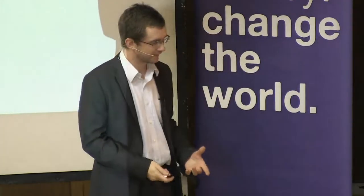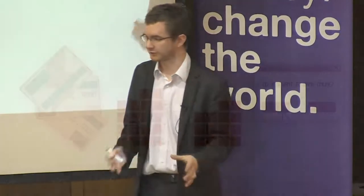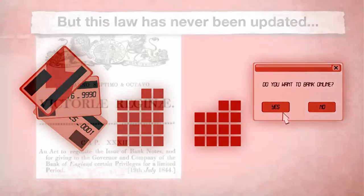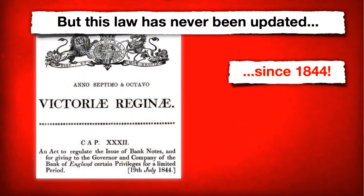Over time, as we discovered electricity, we got debit cards, electronic fund transfers, and internet banking — to the point now where more than 99% of all the money that changes hands does so electronically. The shocking thing is that even though our monetary system is now electronic, this law has never been updated since 1844, which means it's just shy of 170 years out of date — the law that actually governs our monetary system.